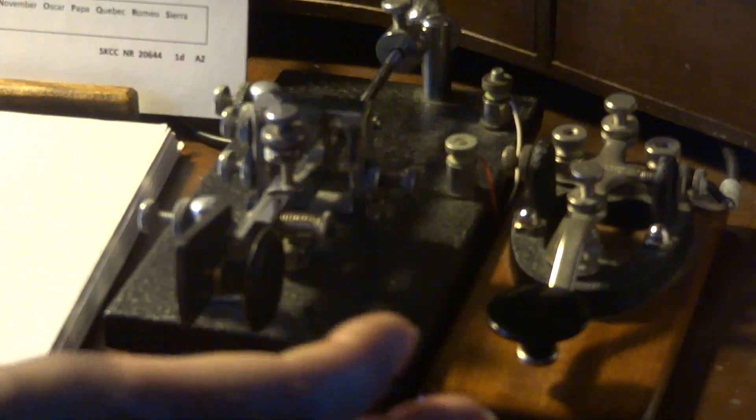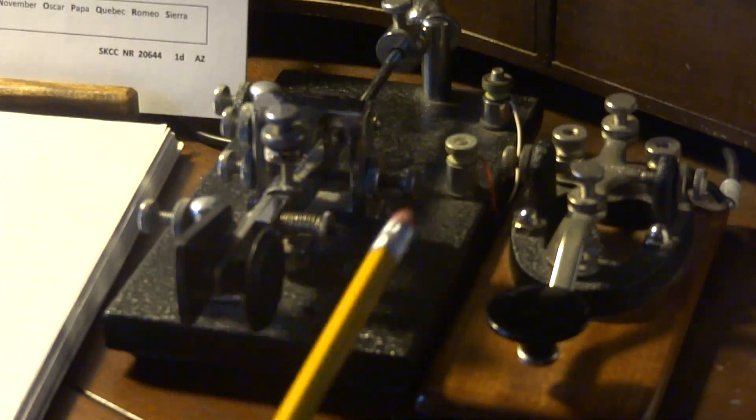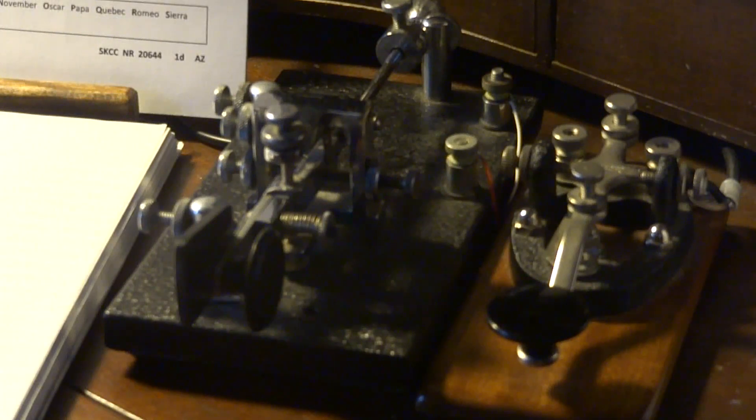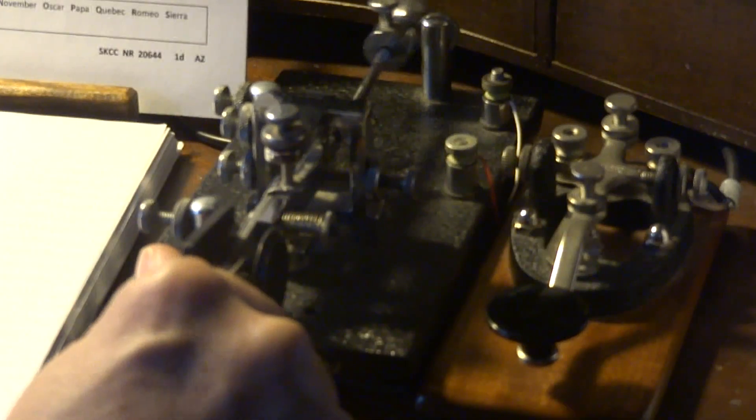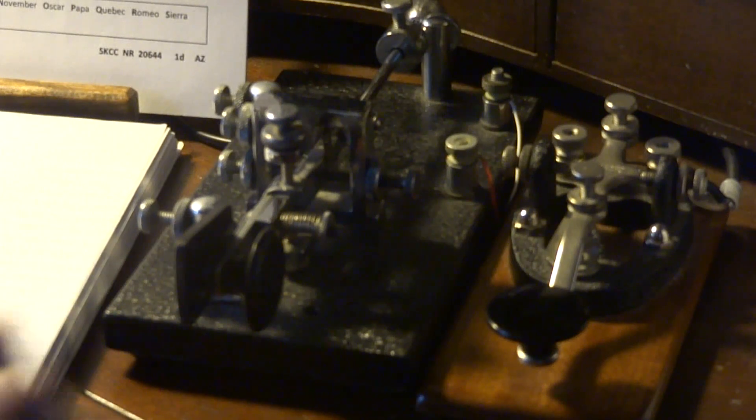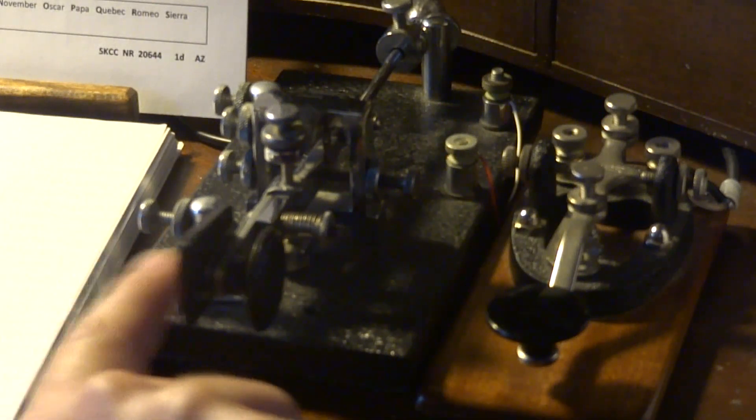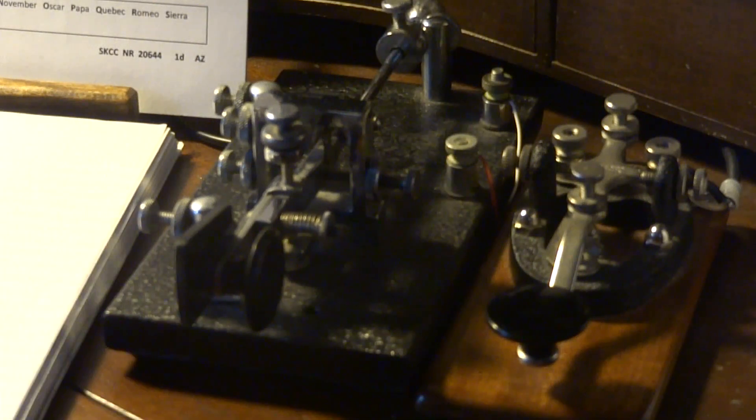But unlike this key where you have to repeatedly make all the dots, this key automatically makes the dots mechanically. So that's why they call it semi-automatic because you have to make your own dashes but the key will make your own dits for the Morse code signal. So if I hold this key this way, you can hear it's making those dits by itself. So let me zoom the camera in and show you this in a little more detail.